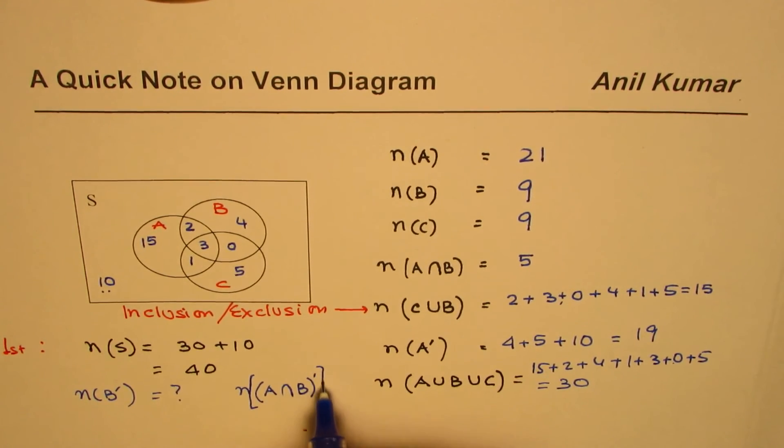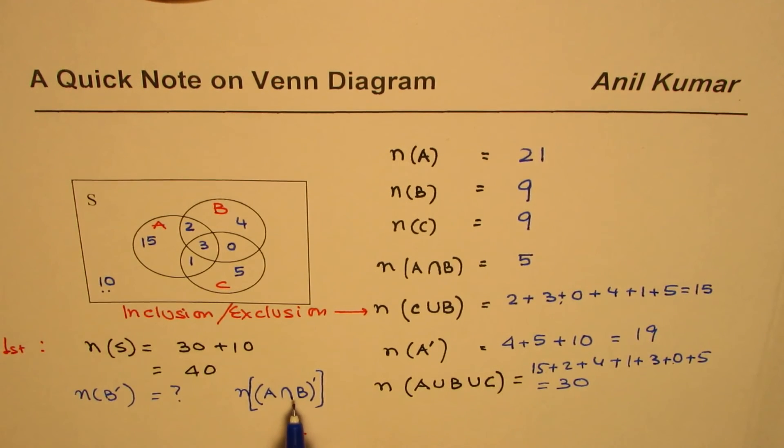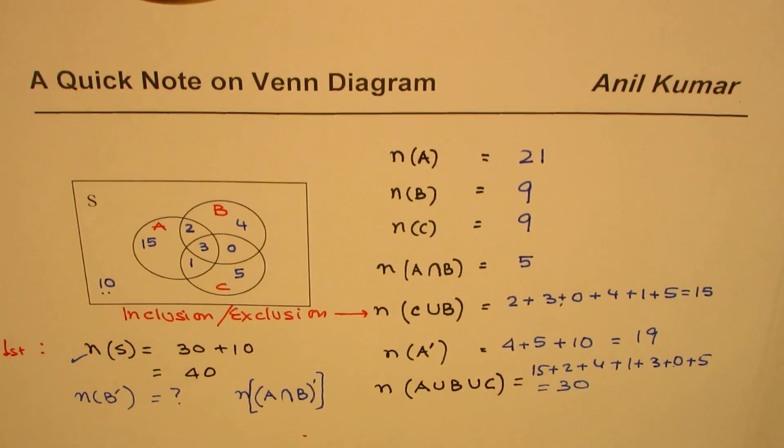So you could have combinations where we are talking about complement, not in. In that case, the sample space is very important to be included. All these answers will always include this number 10. That's what I wanted to specify. I hope that really helps. I'm Anil Kumar, and if you like my video, you can always subscribe and share them. Thank you and all the best.